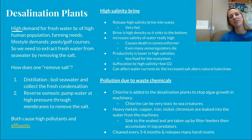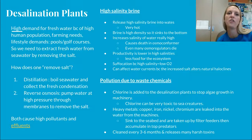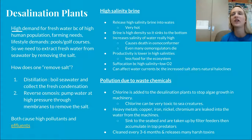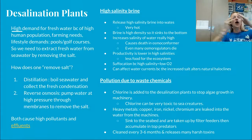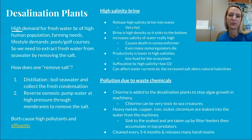Desalination plants remove salt from water. With human population increasing, there is high demand for water — not just for drinking but for agriculture, golf courses, pools, water parks, and resorts. We need to extract fresh water from seawater by removing salt. This can be done through distillation — boiling seawater so only H2O boils out and condenses, leaving salt behind — or reverse osmosis, pumping water at high pressure through membranes that extract water and leave back the salt.